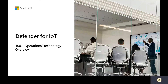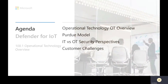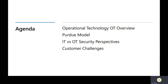Welcome to the session. We'll be talking about operational technology overview, which includes a number of different components. One of them is the Purdue model — a way to describe how networking happens and what devices are placed within the network. We'll discuss that, as well as IT versus OT security perspectives and the different challenges as they relate to OT security and what customer challenges we need to address.